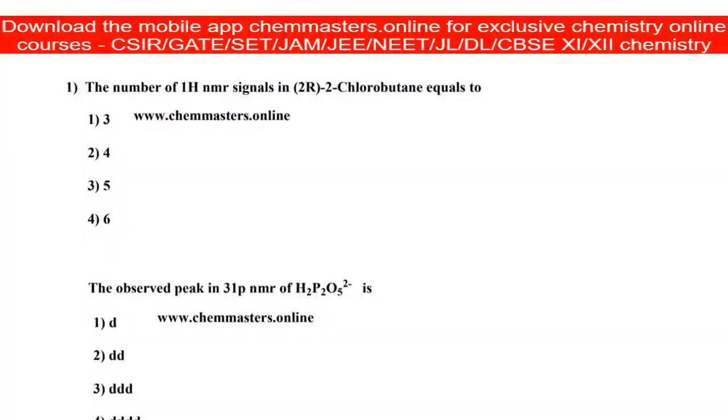The number of H NMR signals in 2R-2-chlorobutane. Most aspirants choose option 2, which is four signals, as the correct one, but that is absolutely wrong. Let's see why it is wrong.